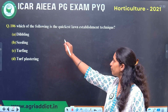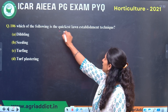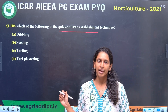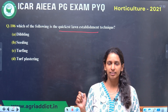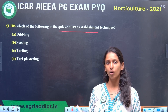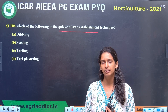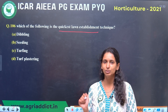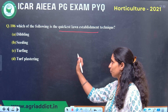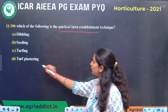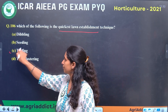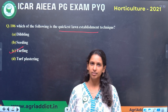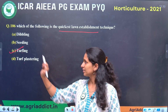Next question: which of the following is the quickest lawn establishment technique? This is an important topic — every year they ask questions from lawn establishment and turf grass management. The quickest lawn establishment method is Turfing. Don't get confused between Turfing and Plastering — the right answer is Turfing.